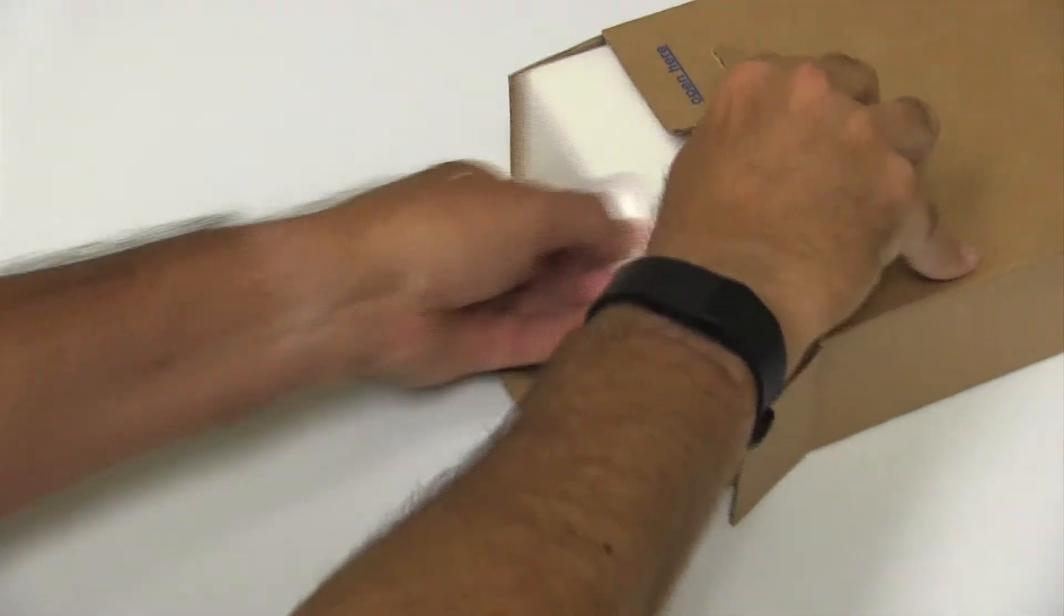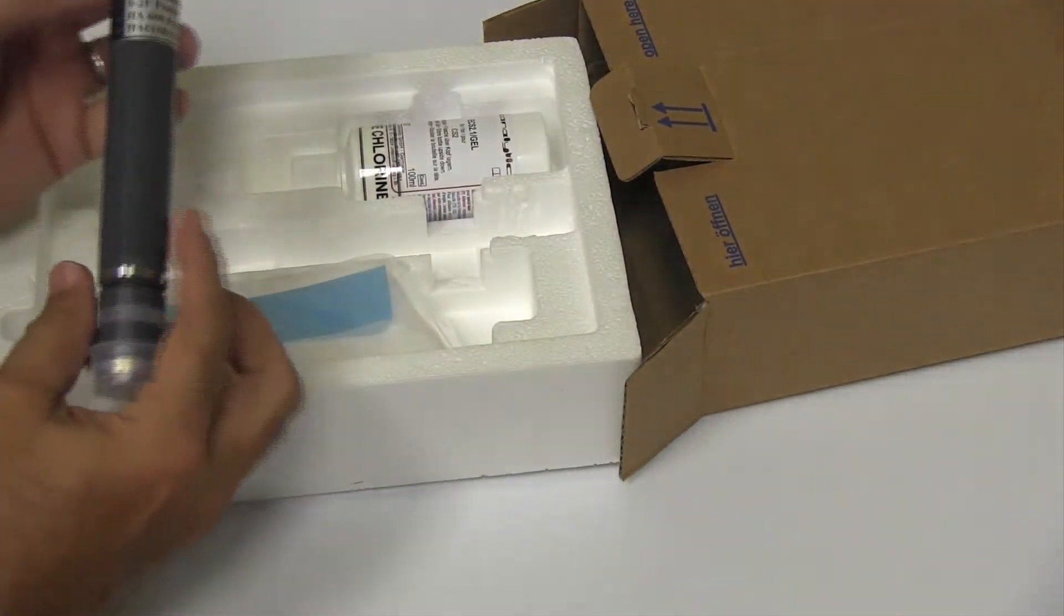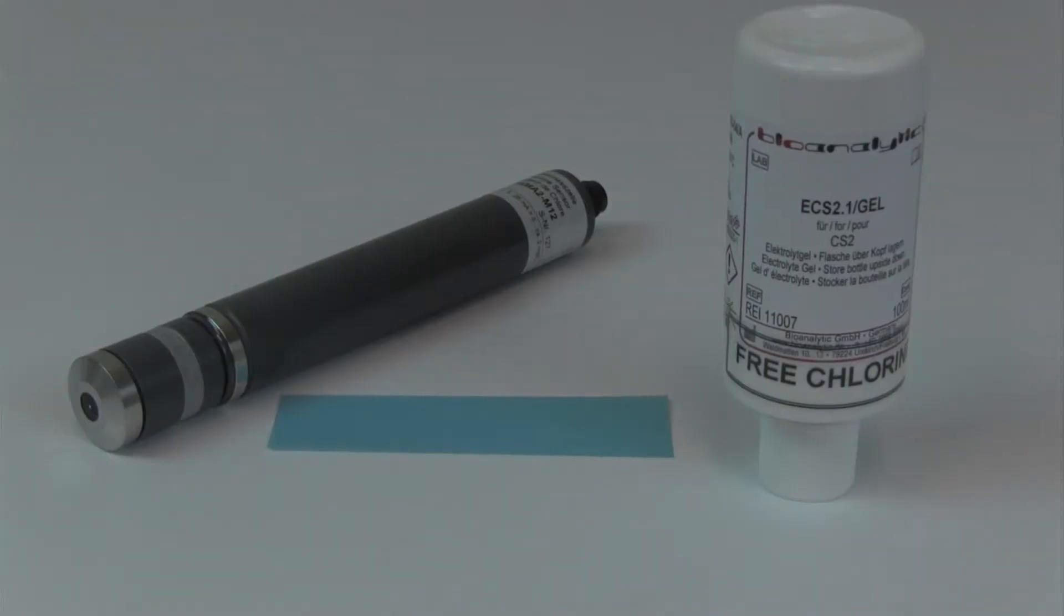It only takes a few minutes to assemble the sensor or to perform any routine maintenance. The sensor kit includes a probe with a membrane cap, a one-year supply of electrolyte, and a single piece of blue abrasive paper.